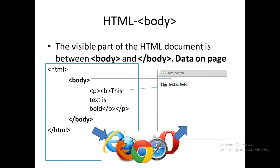The HTML body is the visible part of the HTML document, always written in between the opening body tag and closing body tag. The data written in between the body tag is displayed on your web page. This is an example of the body tag HTML code; when we use this code in Internet Explorer or any browser, it converts it into a web page.